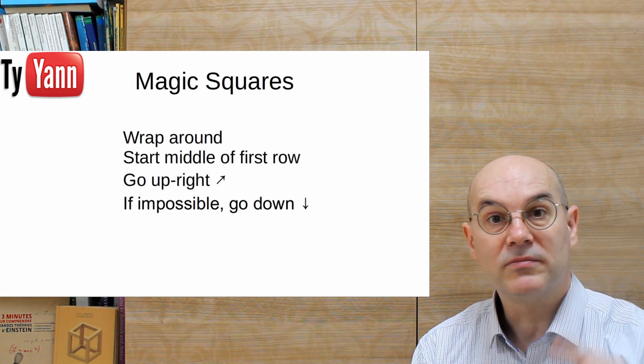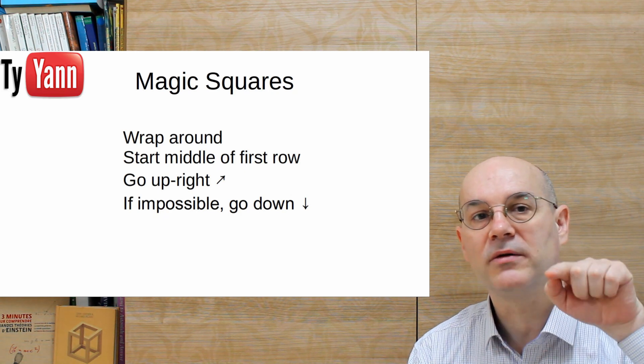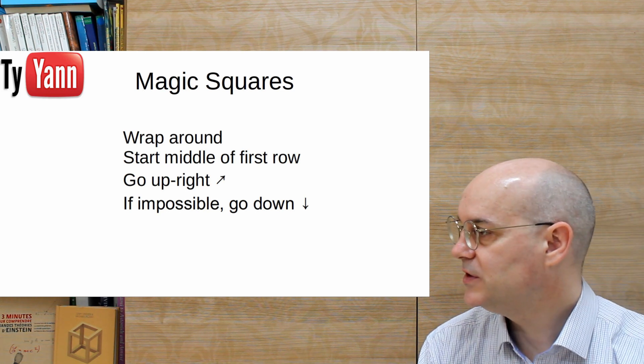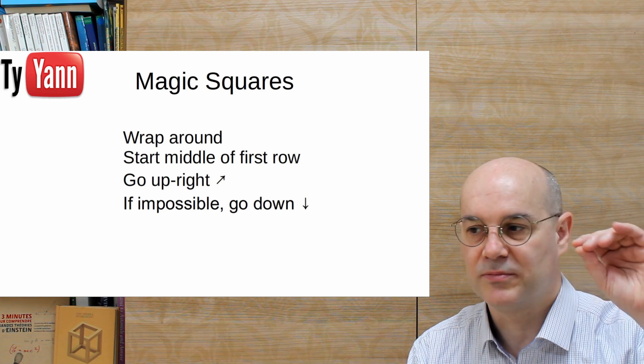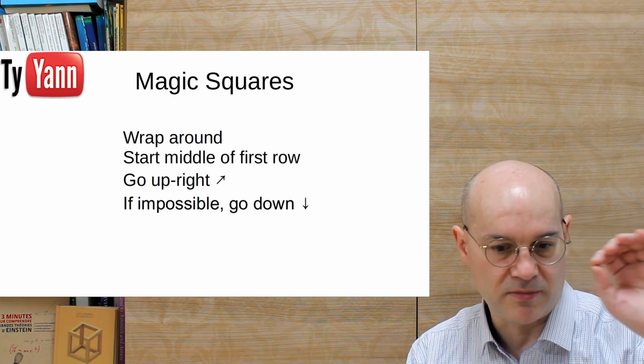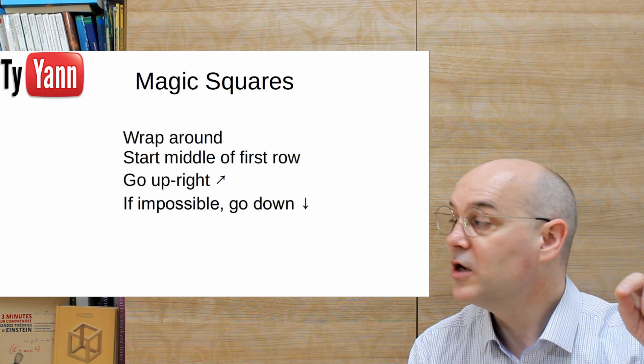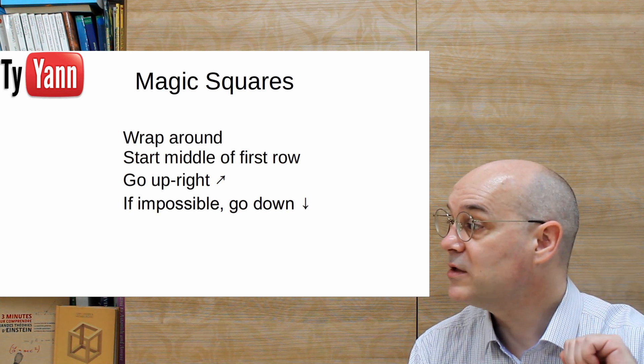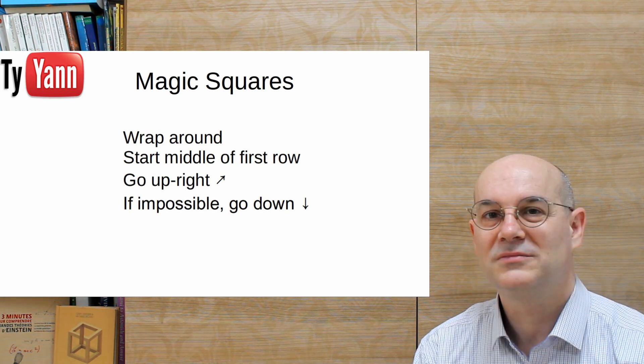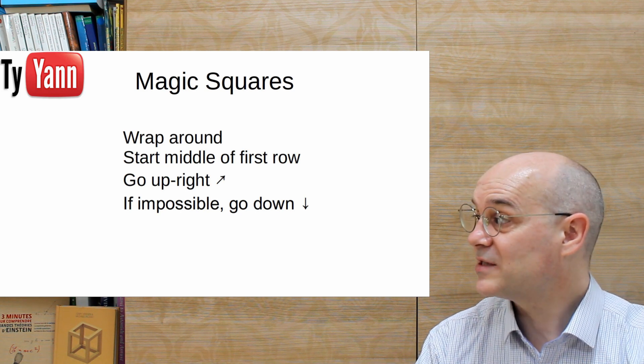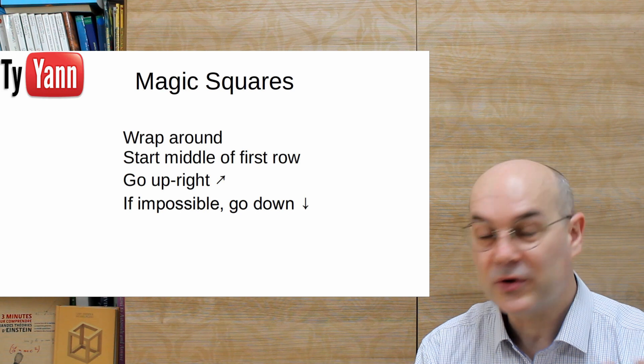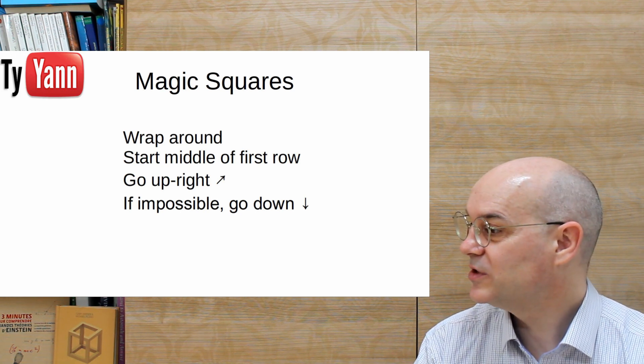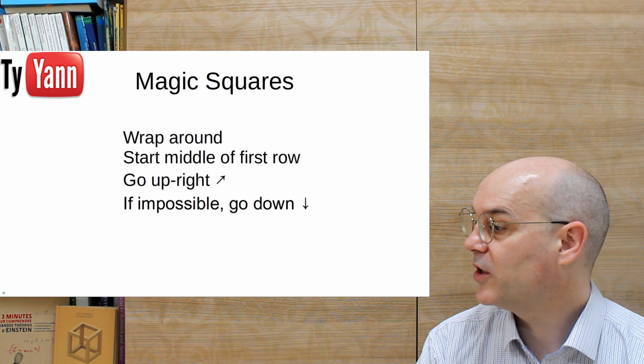You start in the middle of the first row, so top middle, that's very easy. You go upright, so you count and you go upright. And if you can't, which means if the square you arrive, the place is already occupied, there's some other numbers in there, then instead of going upright, you go down. That's very simple. And that's how you build any odd order magic square.